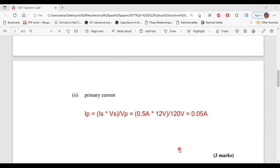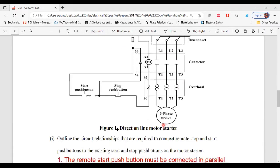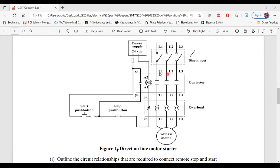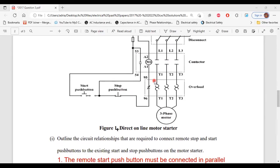Let's move on to part C. It says figure four shows the schematic diagram of a three-phase direct online motor starter. Here's figure four, the schematic diagram of a direct online motor starter. Let's look at what part C is asking for. Part one of C says, outline the circuit relationships that are required to connect remote stop and start push buttons to the existing start and stop push buttons on the motor starter.